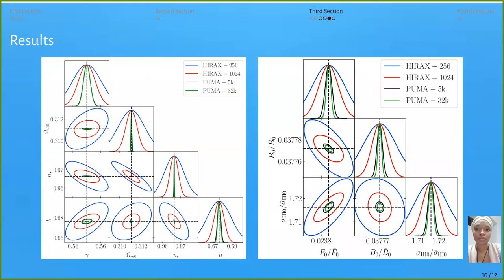This is the results we've got. We realized that the survey PUMA-32K is the one which gave us better constraints compared to HIRAX. On the left are the cosmological parameters, and on the right are the astrophysical parameters. Both results show that PUMA gives better constraints.